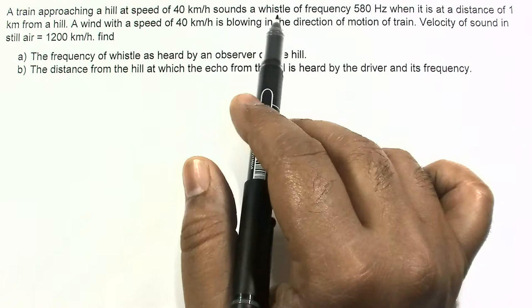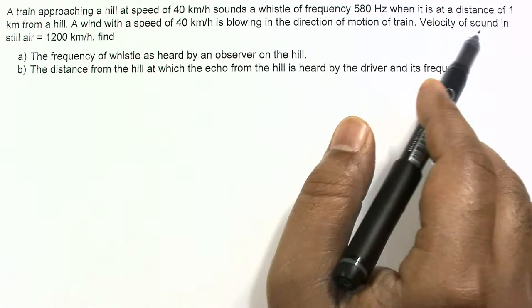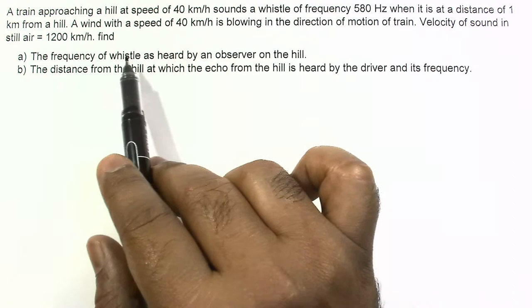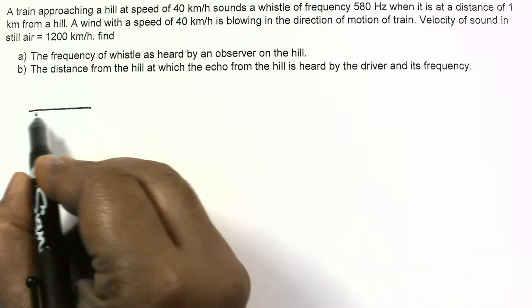In this question, a train approaching a hill at a speed of 40 km per hour sounds a whistle of frequency 580 Hz. When it is at a distance of 1 km from the hill, a wind with a speed of 40 km per hour is blowing in the direction of the motion of the train. The velocity of sound in still air is equal to 1200 km per hour. Find the frequency of the whistle heard by an observer on the hill, the distance from the hill at which the echo is heard by the driver, and its frequency.